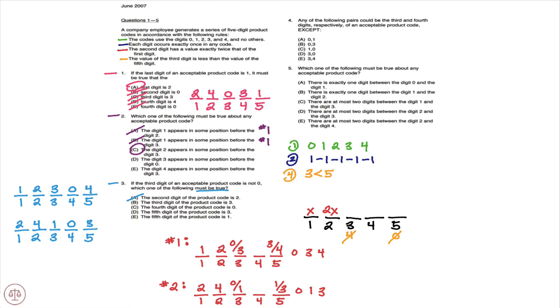B, the third digit of the product code is three. In scenario one that's true, but in scenario two it's one, so B doesn't have to be true and B is out.